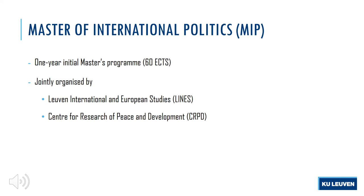The second is the CRPD, or the Center of Research on Peace and Development, which is a multidisciplinary center where political scientists are joined with, for example, sociologists and anthropologists in the study of conflict, peace, and development. You can find more information on these two research units on the website of the Faculty of Social Sciences.